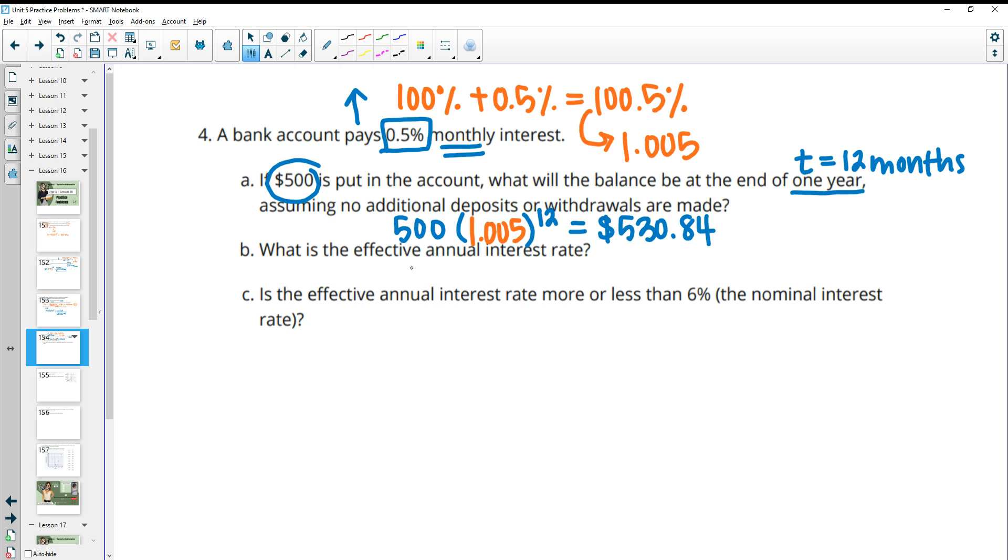So then what's the effective annual interest rate? This means how much did you actually earn in that one year? What percent did you get in that one year? So we'll take our new total divided by our original amount. So we're going to do 530.84 and then we're going to divide by 500 to figure out the growth factor for just those 12 months, for that one year.